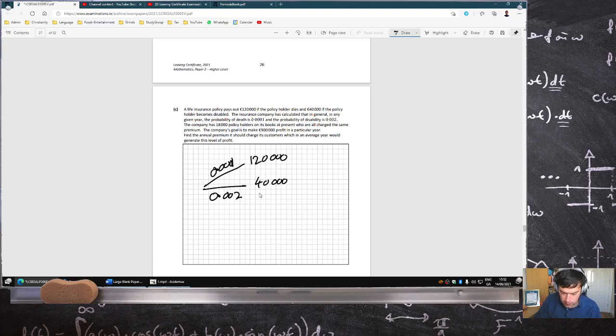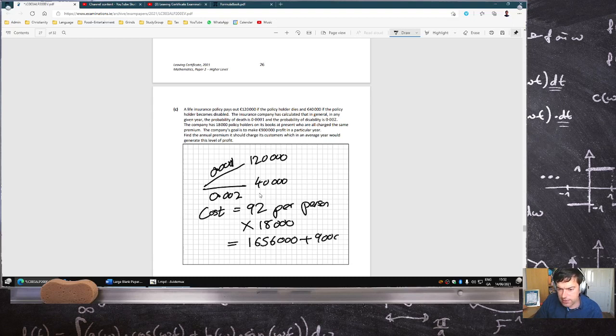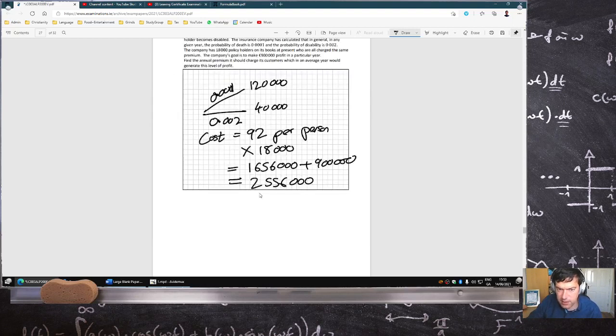120,000 times 0.0001 plus 0.002 times 40,000. So this is a cost to the company of 92 euros per person. If we multiply that by 18,000, that would be 165,600, but they'd like to make 900,000. So they need to get in total 255,600 in premiums from the 18,000 policyholders. So that's 142 each.